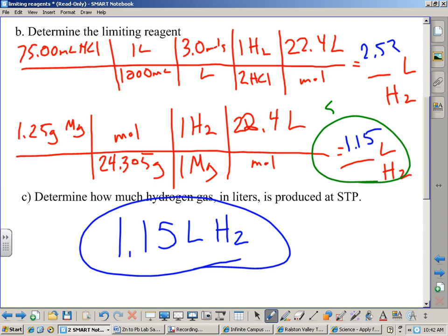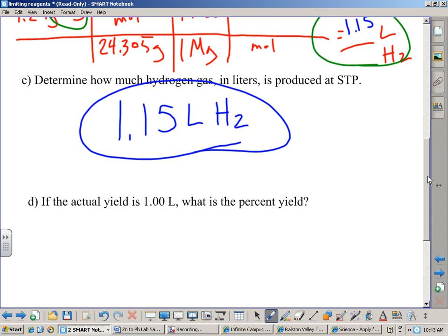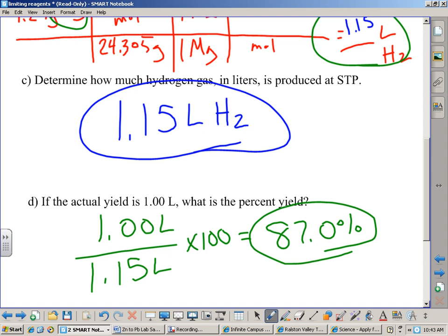Now, the limiting reagent. We go up here. Since we've identified this as my smaller value, we go back to the start of the problem. And we identify that the magnesium is my limiting reagent. That's what's going to run out first. Any questions? All right. If the actual yield was 1.00 liters, what is the percent yield? So, we take 1.00 liters and 1.15 liters times 100, and that gives us what? 87.0%.